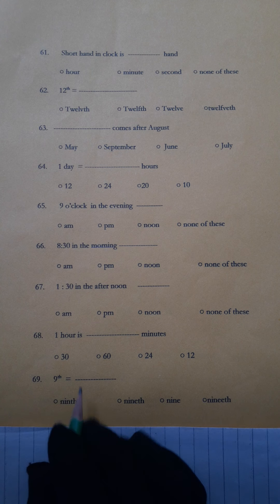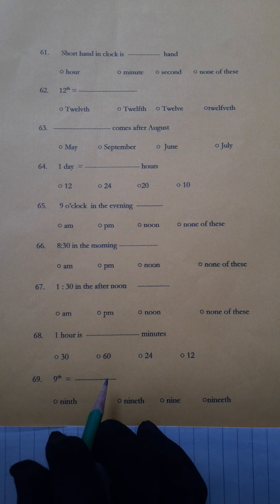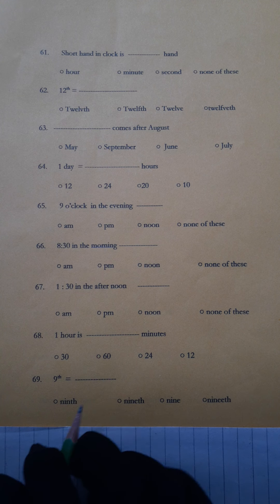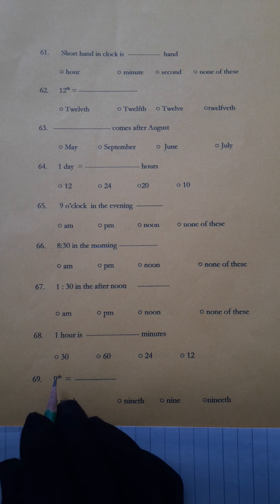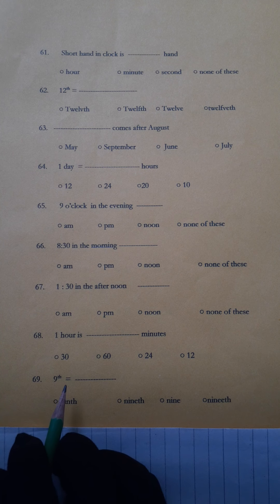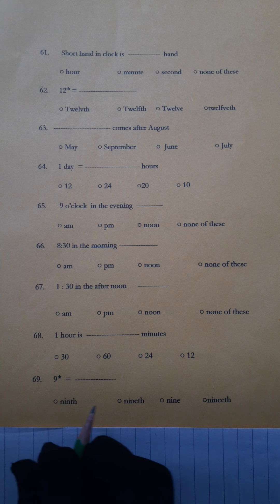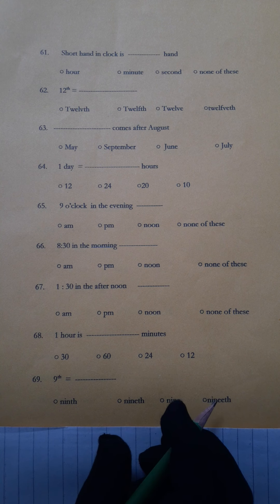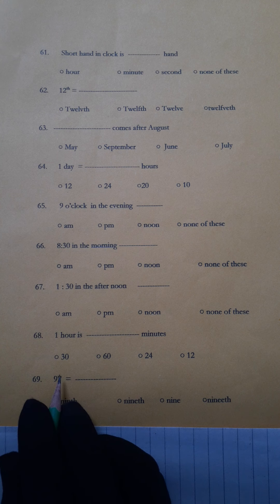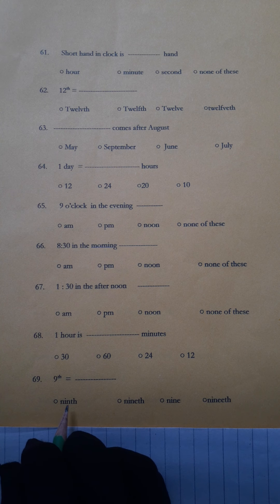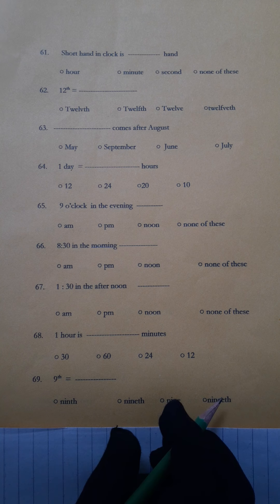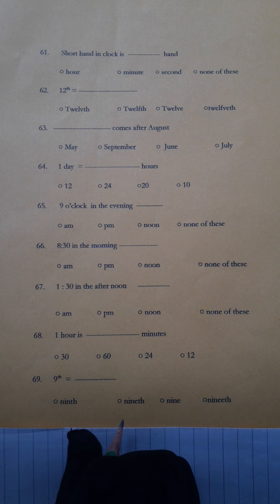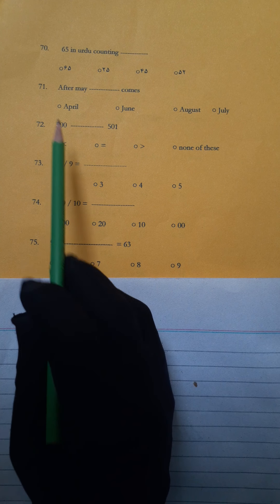Number 69: This is an ordinal number spelling question — 'ninth.' Some students are confused. Look at the spelling carefully: which one is correct — N-I-N-T-H? Select the correct spelling from the four options and write it on your answer sheet.